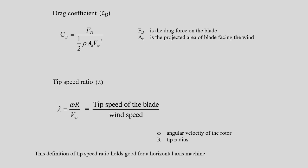The drag coefficient of a blade of the wind rotor is the ratio of drag force F suffix capital D to the force of the free stream wind speed. The drag coefficient is represented as C suffix D. F_D is the drag force on the blade and A_B is again the projected area of the blade facing the wind. The only difference between the lift and drag coefficient equations is F_L versus F_D in the numerator.